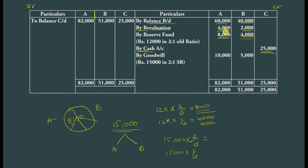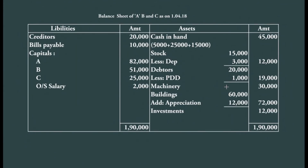Now we total and balance the capital accounts. A's credit side: 60,000 + 4,000 + 8,000 + 10,000 = 82,000. B's credit side: 40,000 + 2,000 + 4,000 + 5,000 = 51,000. C's credit side: 25,000. These totals are written as 'To Balance Carry Down' on the debit side and will appear as 'By Balance Brought Down' in the next year — A: 82,000, B: 51,000, C: 25,000.